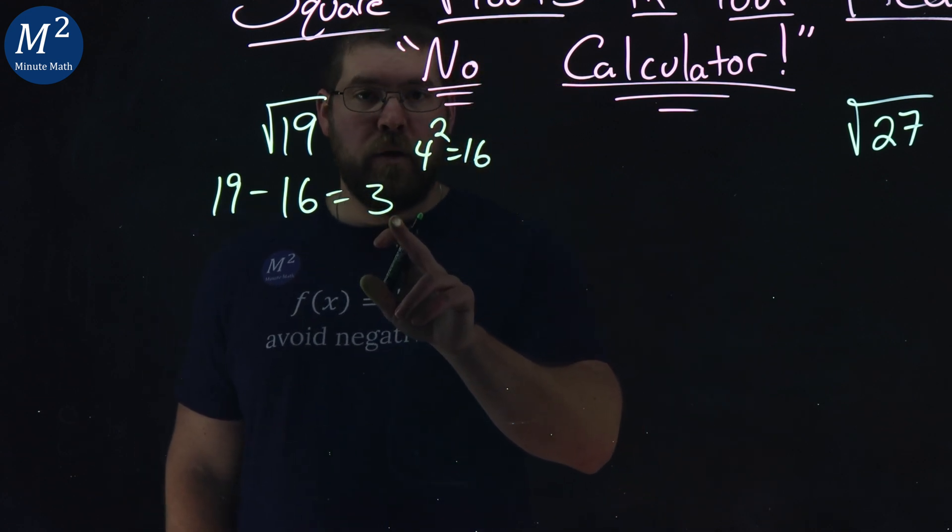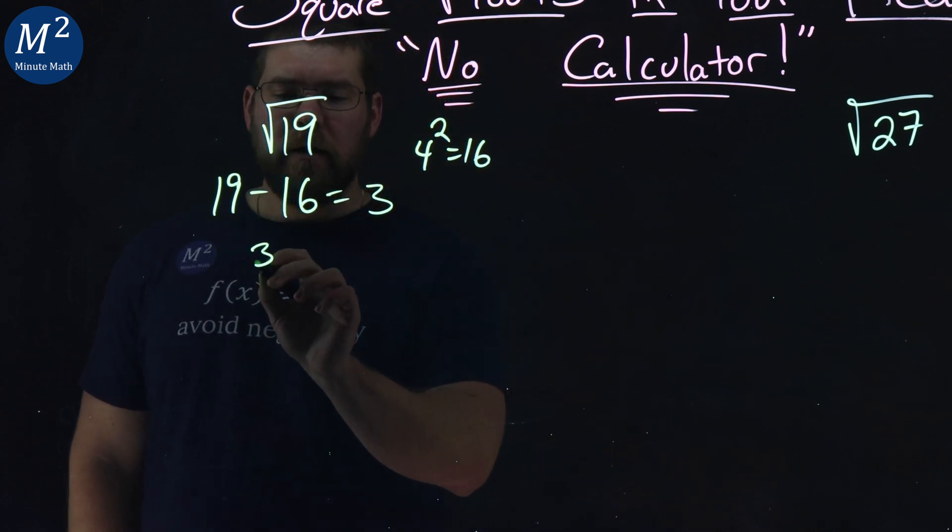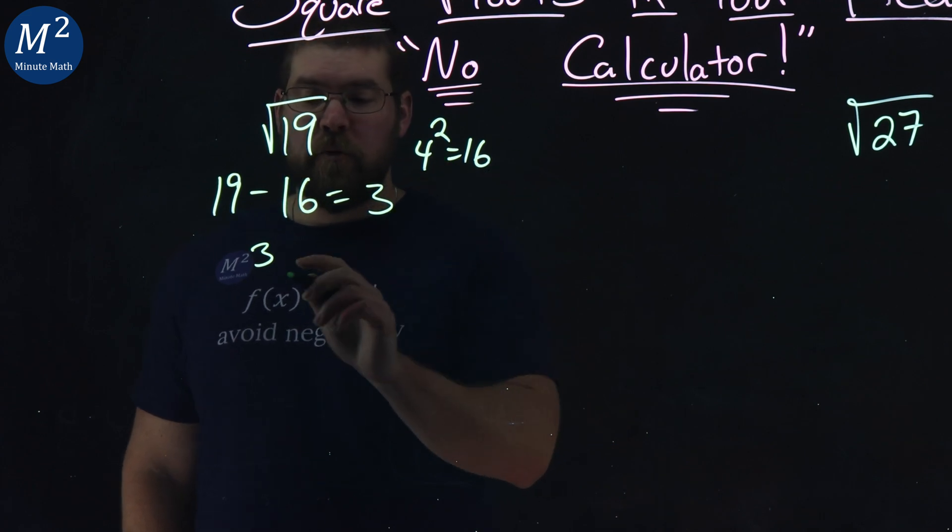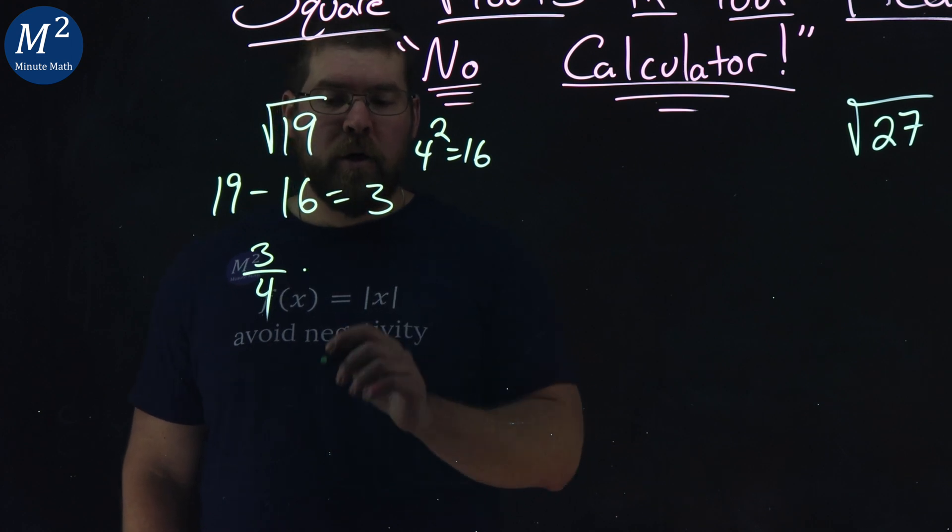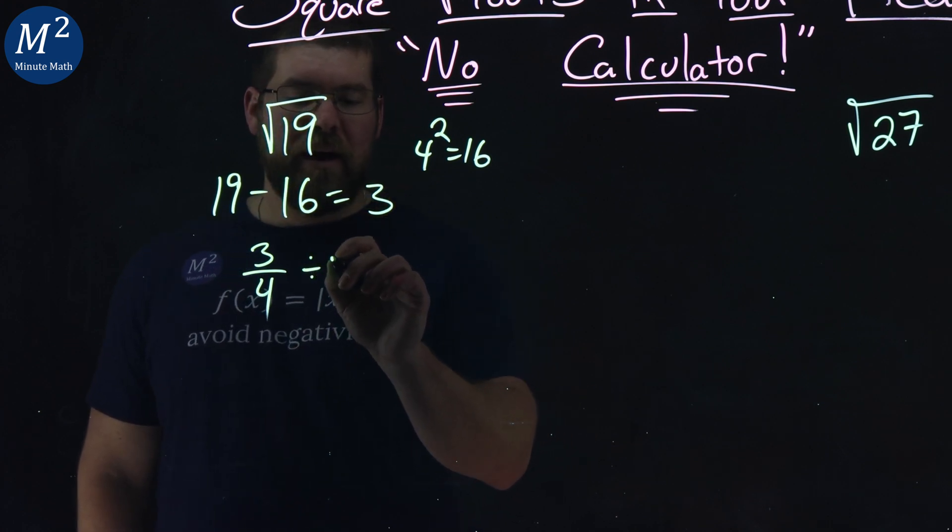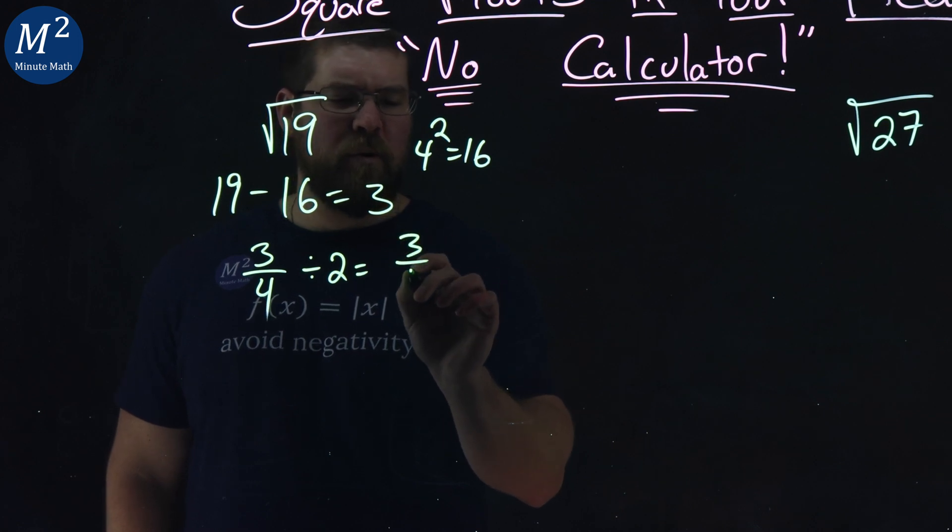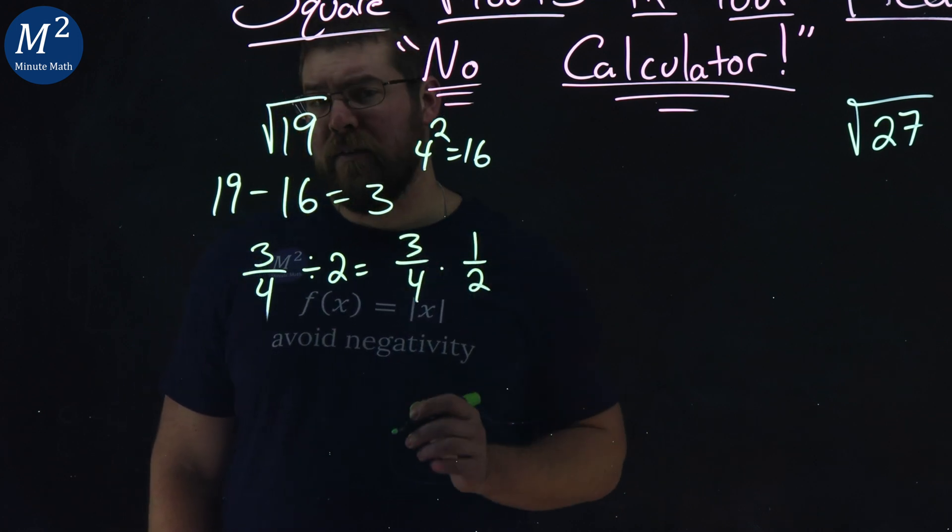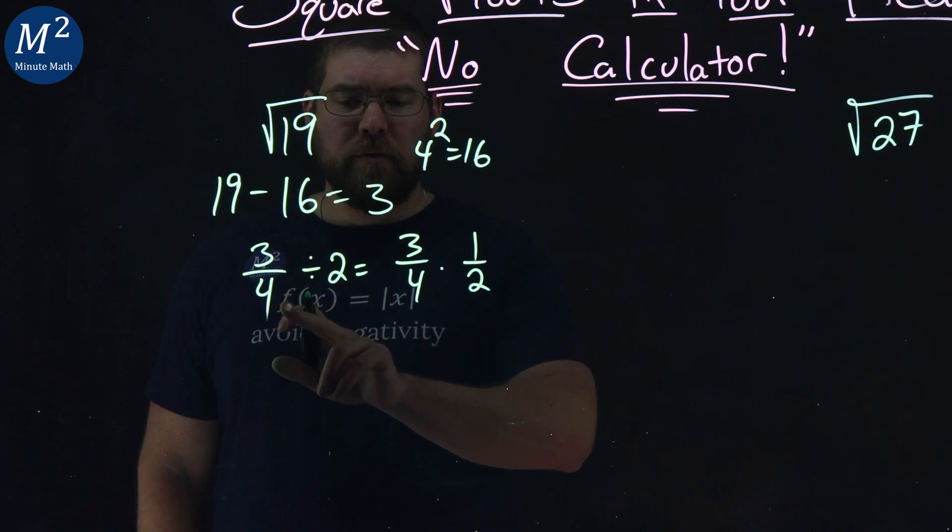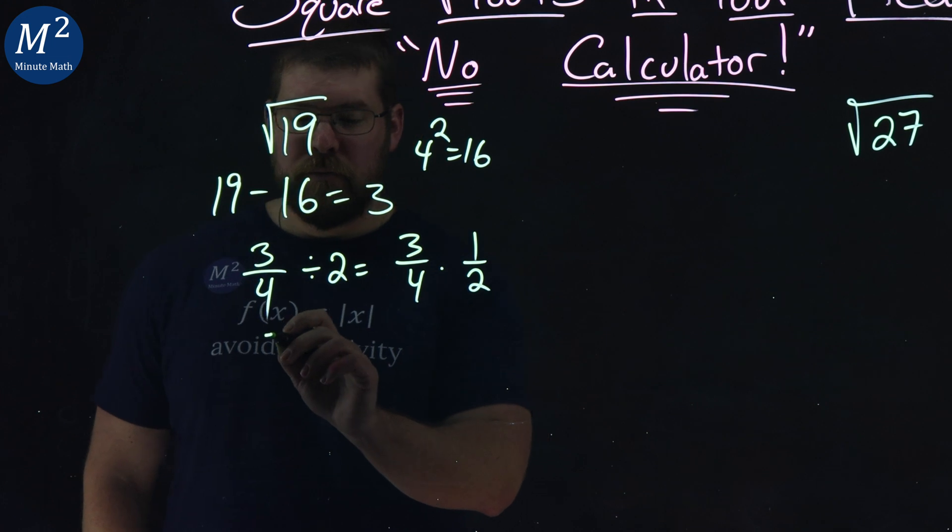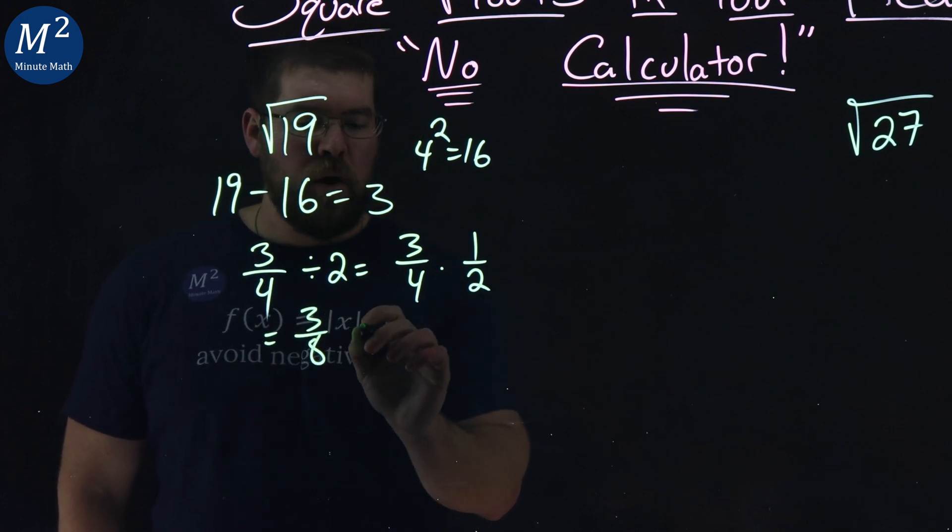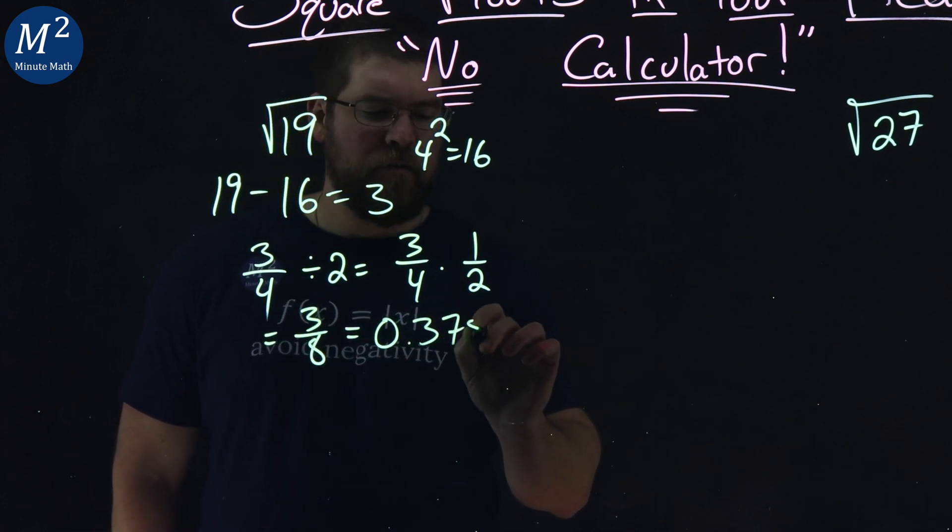3 divided by the square root of 16, which is 4, and we're going to divide the whole thing by 2. So that's the same thing as 3 fourths times 1 half. So we have 3 fourths from the square root of 16, and 19 minus 16 gives me 3. Divide that by 2, or multiply it by 1 half, and that's 3 eighths, or the decimal is 0.375.